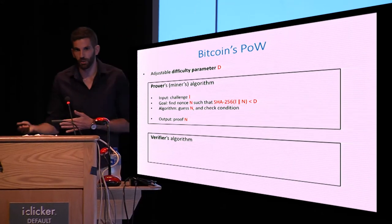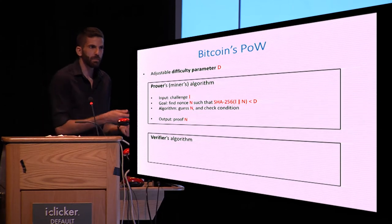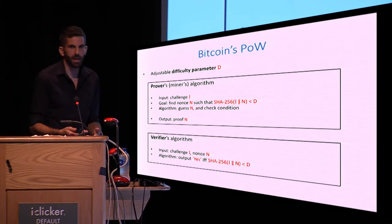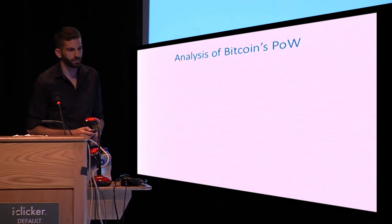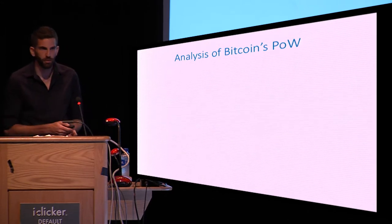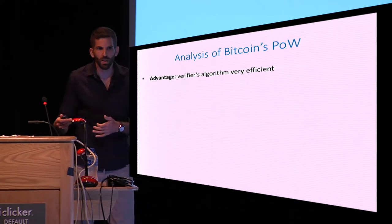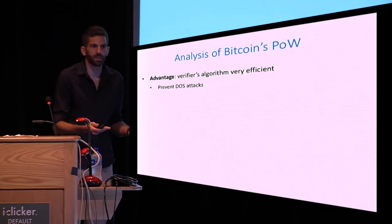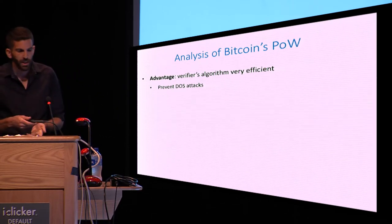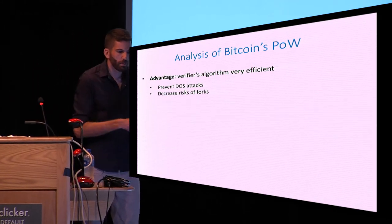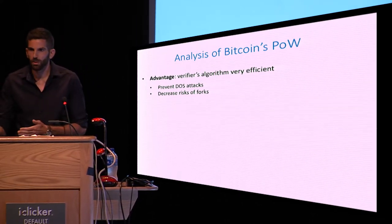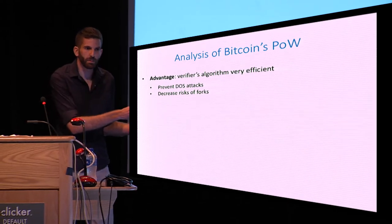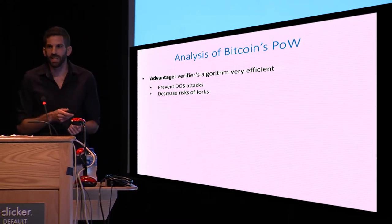There is also the verifier's algorithm executed by each node on the network. The verifier's algorithm takes as input a challenge I and a nonce N, and if the condition is met, adds the block to its local copy of the blockchain. The major advantage of this proof-of-work is that the verification algorithm is very efficient. If verification were slow, it would allow denial-of-service attacks, and blocks would spread much more slowly over the network, creating inconsistencies between nodes — a state often referred to as a fork.